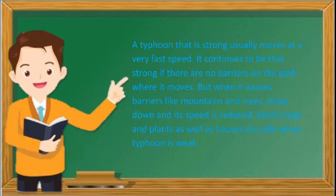Number five, trees serve as windbreakers during typhoons and storms, thus reducing the destruction of homes and agricultural crops. A typhoon that is strong usually moves at a very fast speed and continues to be that strong if there are no barriers in its path. But when it passes barriers like mountains and trees, it slows down and is reduced, keeping small crops, plants, and houses safe.